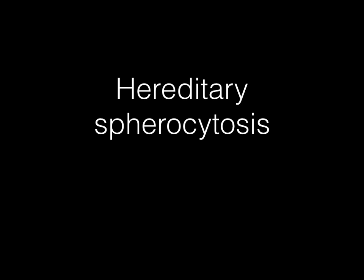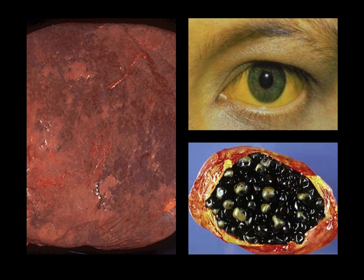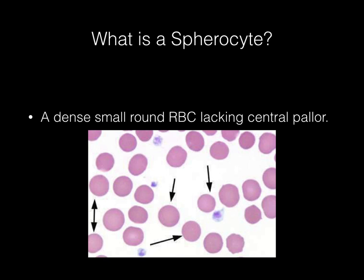Hereditary spherocytosis is an autosomal dominant disorder characterized by a triad of gallstones, jaundice, and splenomegaly. What is a spherocyte? It is a dense, small, round RBC lacking a central pallor.